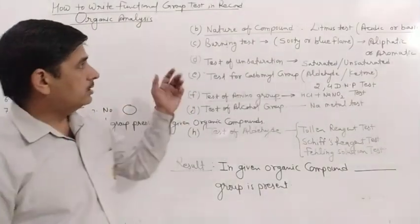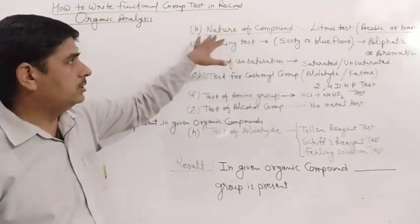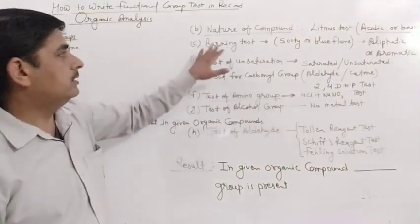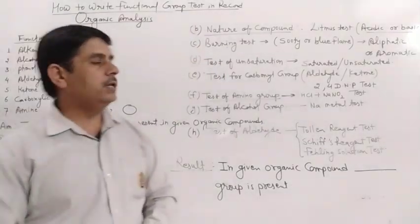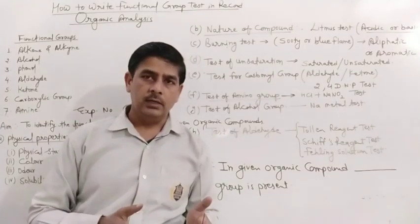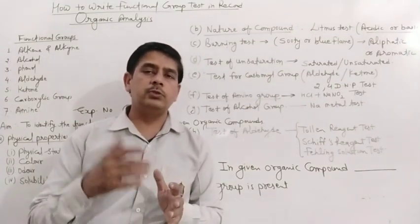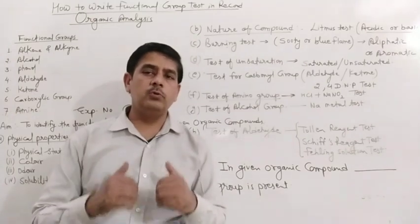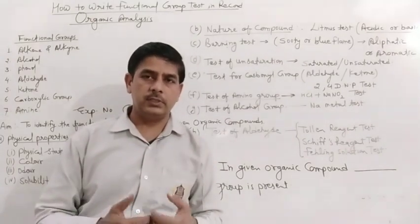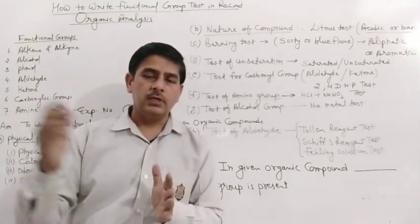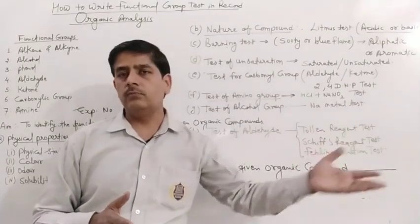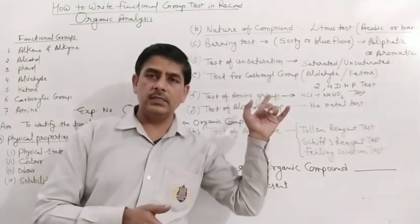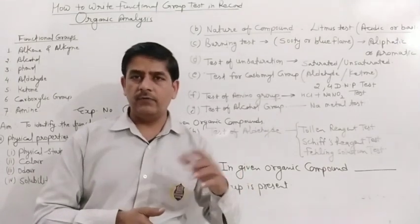Once you write the nature of compound you will identify whether it is acidic or basic; if both are absent you will show the absence. Then the burning test will help you identify whether the given compound is aliphatic or aromatic. If the compound is aromatic then it will burn with a sooty or smoky flame. If it is aliphatic then it will burn with a blue flame. For example, if it is phenol it will burn with a sooty flame; if it is alcohol it will burn with a blue flame. So you can write this test to identify whether you are getting an aromatic or aliphatic compound.